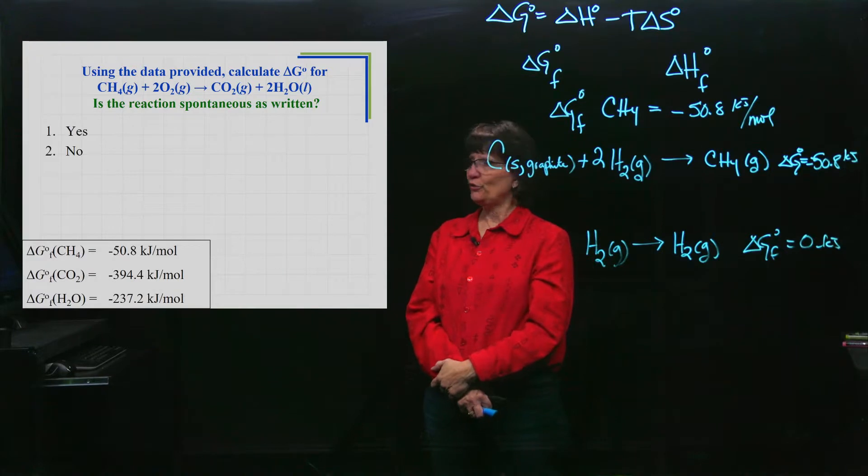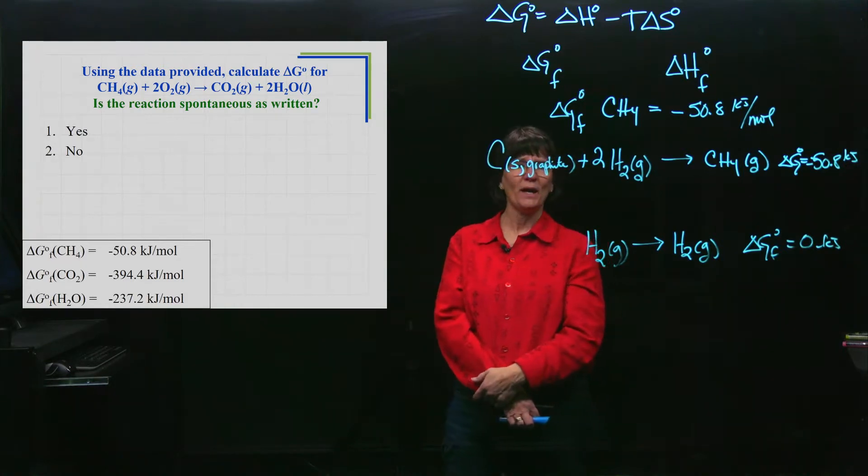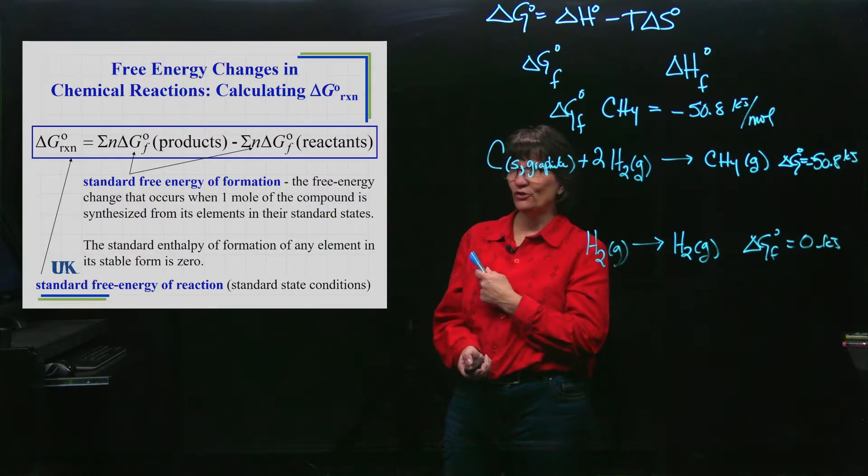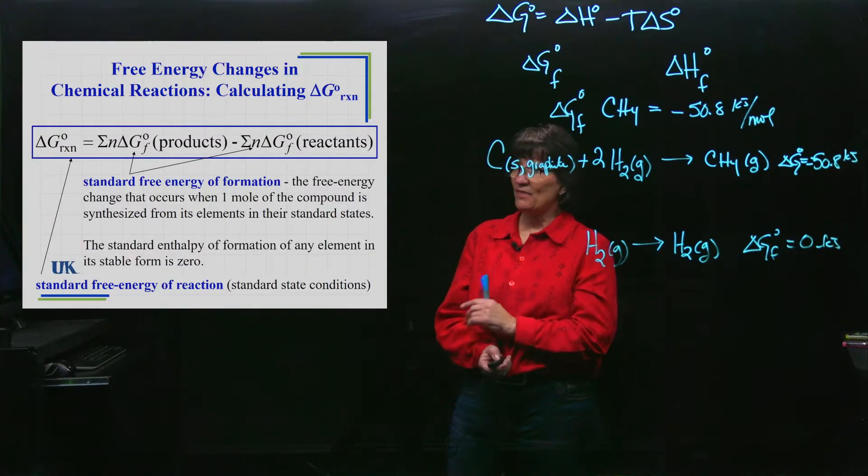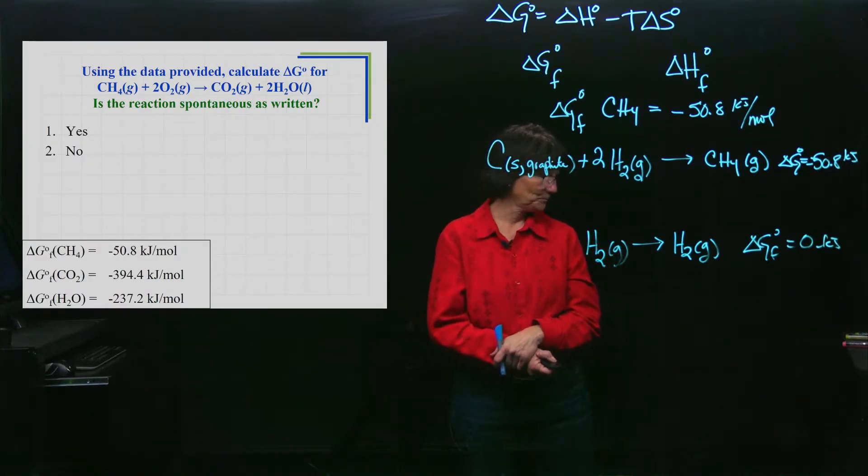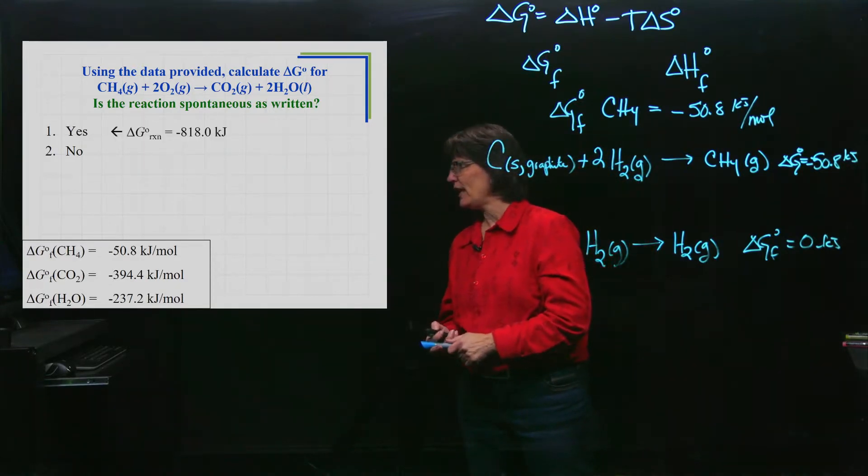You're going to use that data table and determine whether or not this reaction is spontaneous as it is written. What are you going to use to predict that? Since I'm giving you Delta G's of formations, maybe it would be handy to calculate the Delta G using that formula, and then you'll be able to predict spontaneity. I hope you said yes.